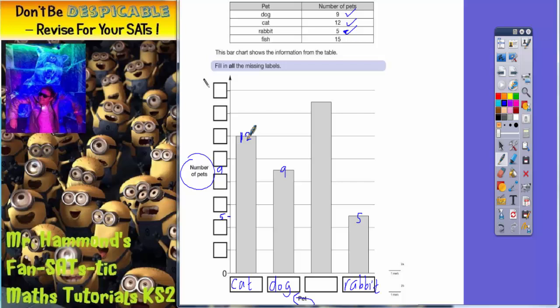So that must be twelve, and the bar label must be cat. Now you can see the top of this bar actually fits in nicely here with this empty box, so we can fill a twelve in there. So the tallest bar must be the most popular pet, must be the biggest number, which is fish.